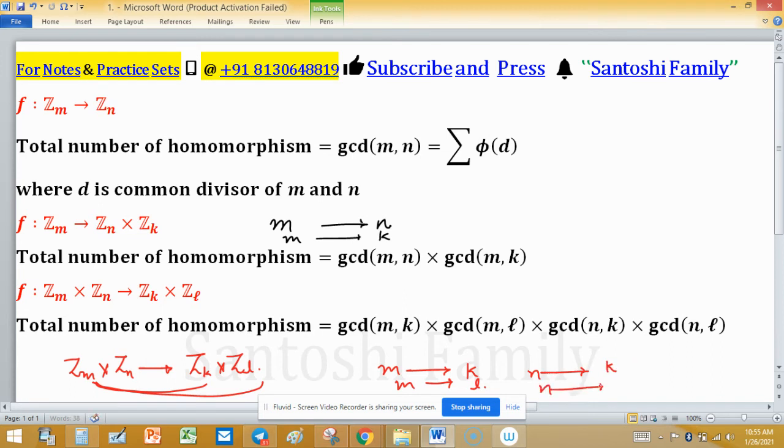Means gcd(m,k), this is first gcd(m,k), and then gcd(m,l).